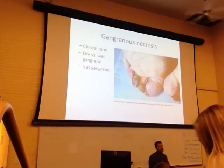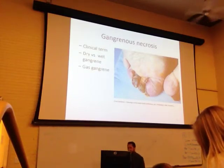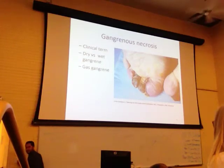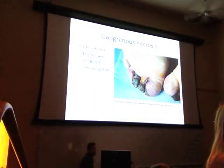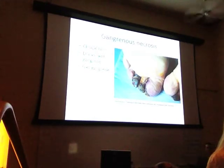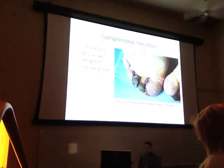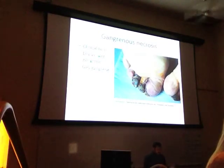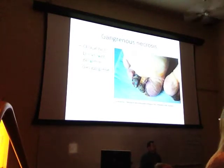Gangrenous necrosis is more of a clinical term — less common in the scientific literature, much more common in the clinical literature. Gangrenous necrosis typically happens due to severe hypoxic injury, where blood flow is reduced to the distal extremities and therefore oxygenation to those tissues is compromised. This can be facilitated in cold environments when you're exposed — when you're cold, blood is shunted toward the core and away from the extremities, which facilitates the problem.